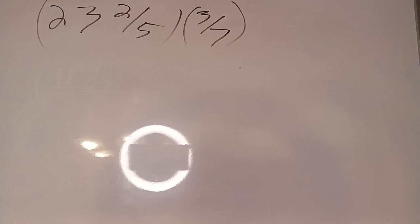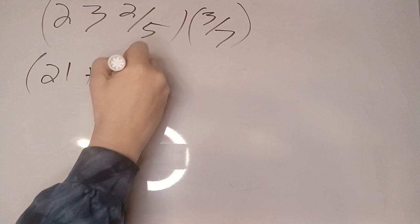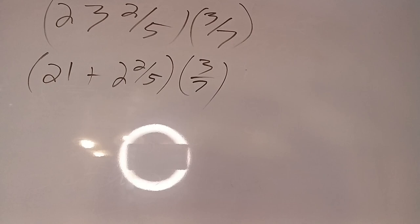All right, so 7 times 3 is 21. So let's write this as 21 plus 2 and 2/5. I then multiply by the 3/7.